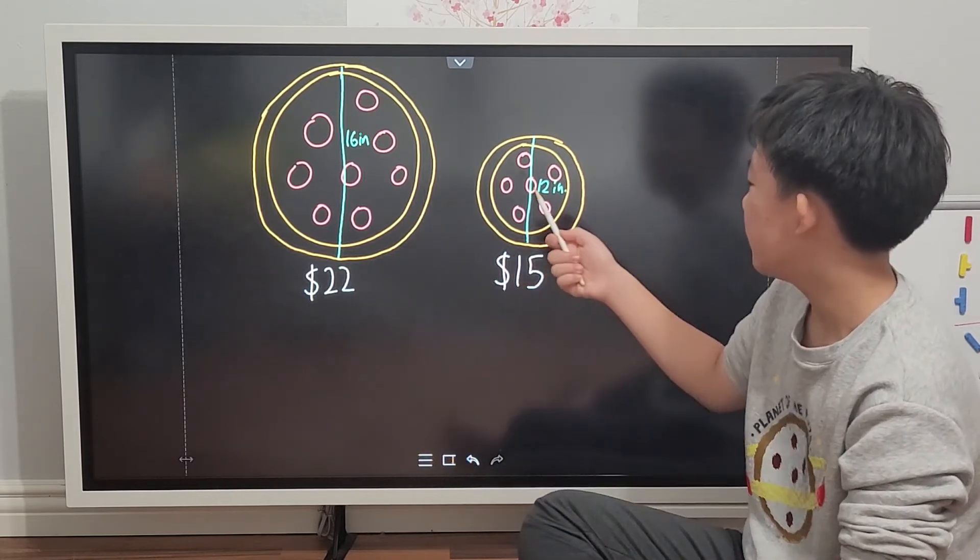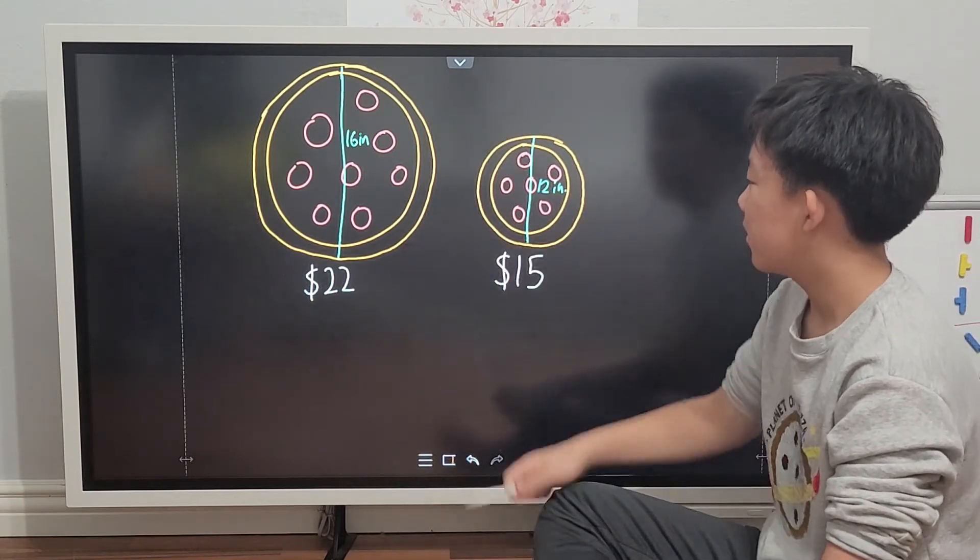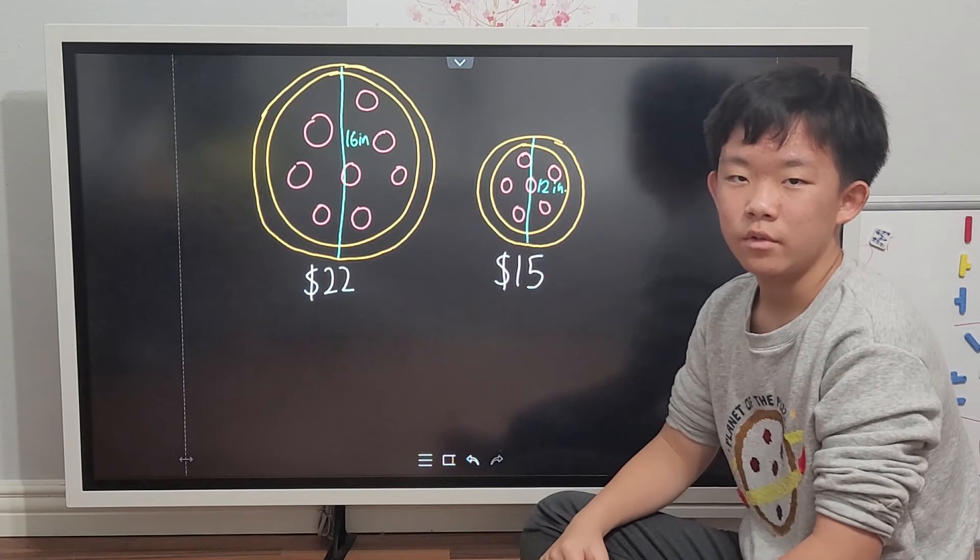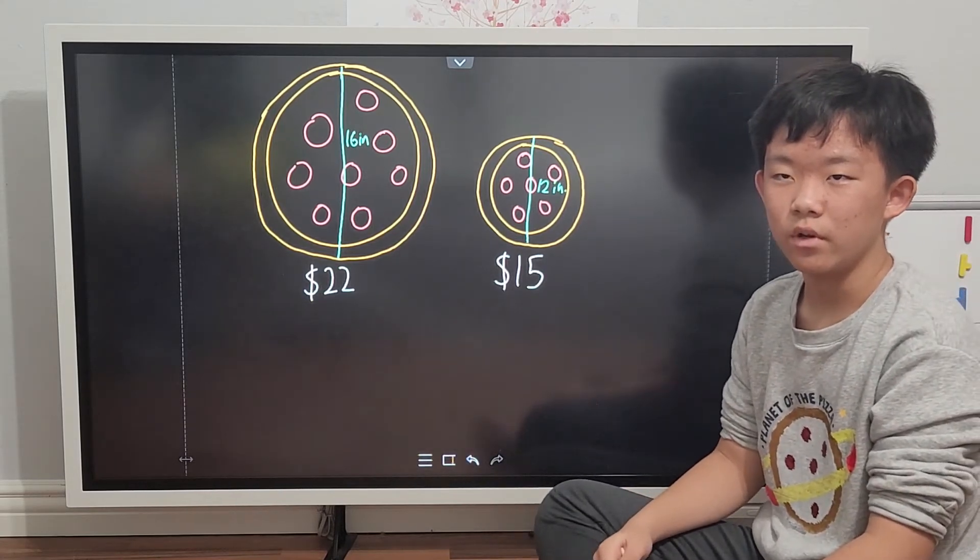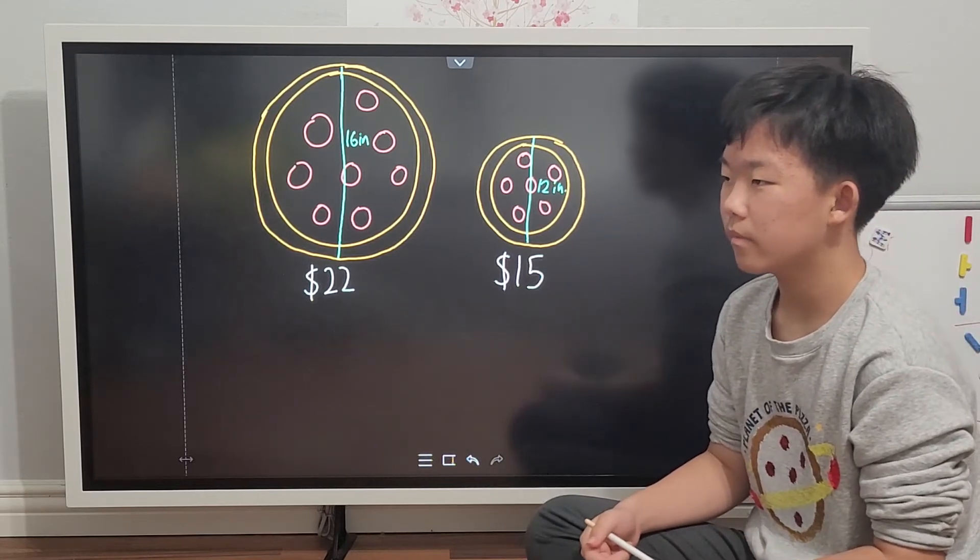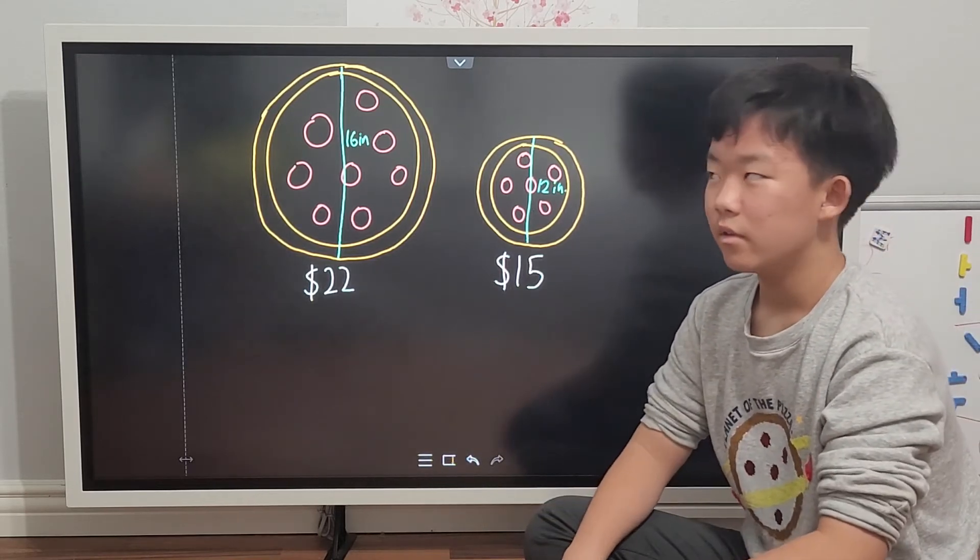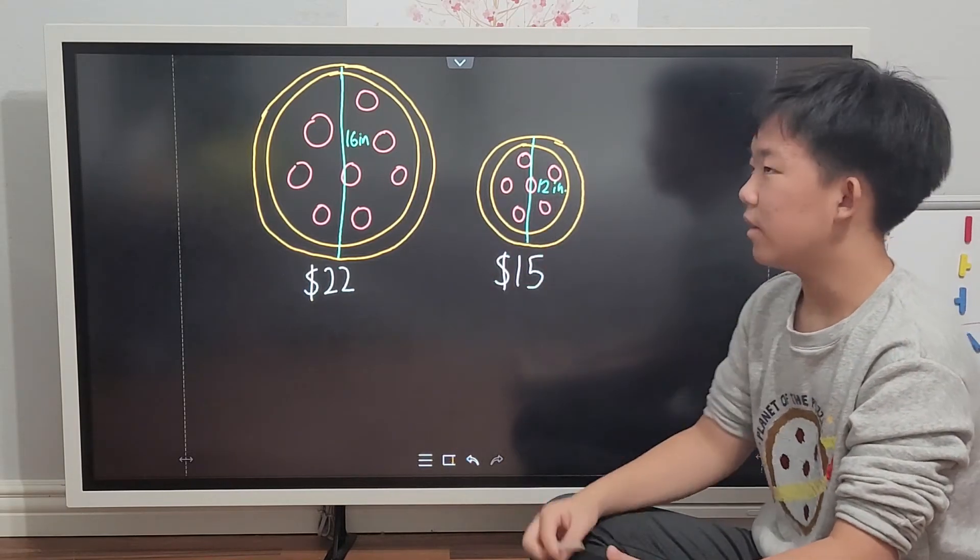So I have two different pizzas here. Extra large, which is 16 inches in diameter, and medium, which is only 12. The extra large costs 22 dollars, and the medium costs 15 dollars. So for the party, should I order two extra large pizzas or three medium pizzas?